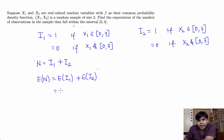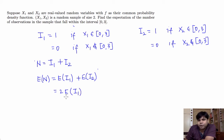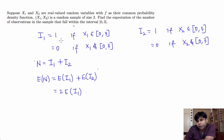So we can simply write it as 2 times the expected value of i1. All we need to do is find the expected value of i1, then find the expected value of N, and we are done. In order to find the expected value of i1, we're going to use the definition of i1.